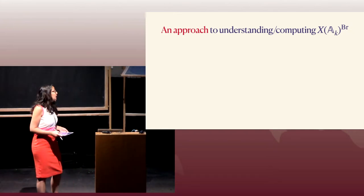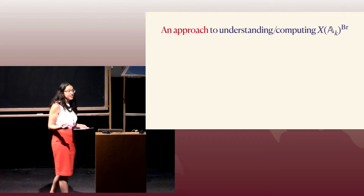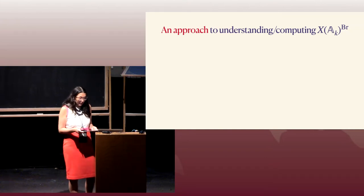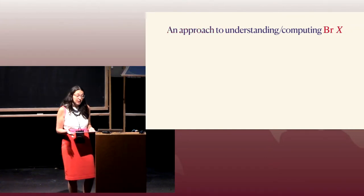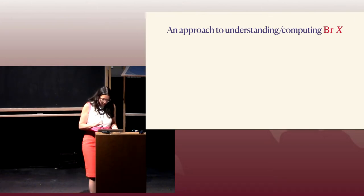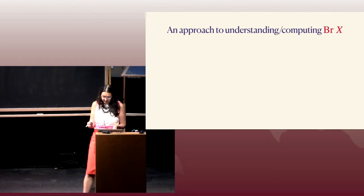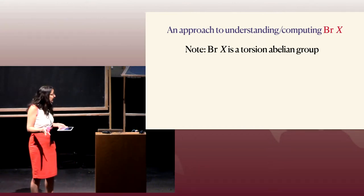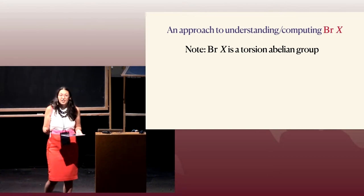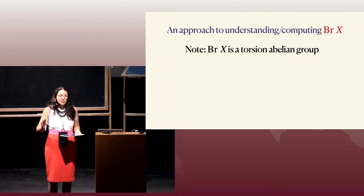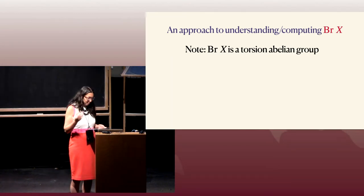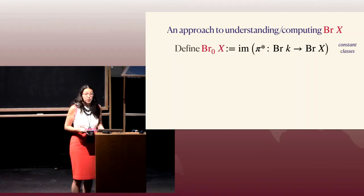Before we get into computing the Brauer set — which was defined as the set of adelic points orthogonal to every element in the Brauer group — first we want to look at computing the Brauer group. It's worth noting that the Brauer group of X is a torsion abelian group. So we're not dealing with very complicated group structure — no normal subgroups or anything like that. It's very simple group structure, but as you'll see, it can still be hard to compute.